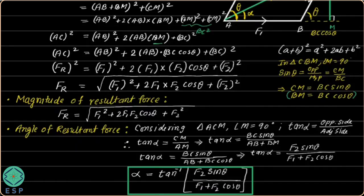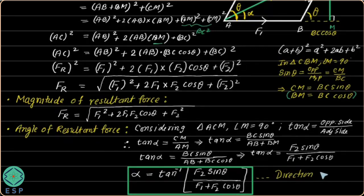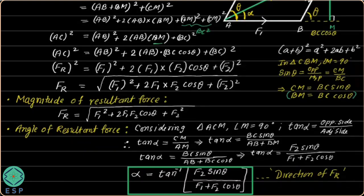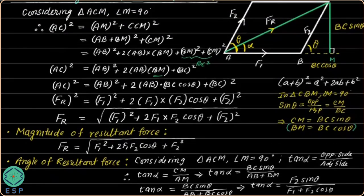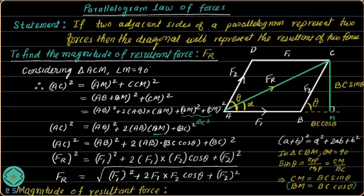This is the expression for the angle of the resultant force, and the previous expression gives the magnitude of resultant force. So we can easily find the magnitude as well as the direction of the resultant force. We shall now see one example based on the parallelogram law of forces.